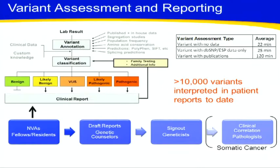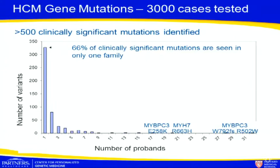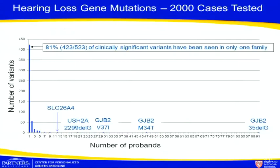We've done this for 10 years, but it's extraordinarily labor-intensive. Even with lots of experience — data from 3,000 HCM cases — still two-thirds of them, we never saw the variant again. It's essentially unique to the family. Developing experience doesn't necessarily help you understand all of these variants when you're doing them in an isolated testing environment. With hearing loss and recessive disorders, it's worse — 81% of the mutations we find we never see again.